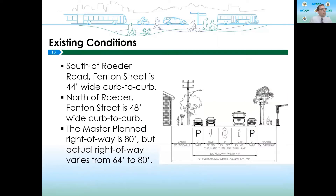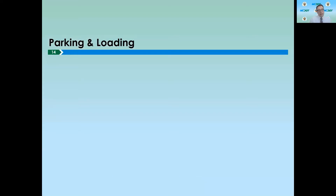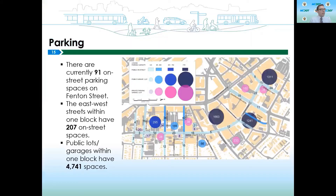In terms of what the street looks like right now, between Roto Road and Cameron Street at the very north end, it is 48 feet wide between the curbs — that's the roadway portion, not including sidewalks. South of Roto Road, it is 44 feet wide, so it's a little narrower in the south, making it more challenging to fit things in. In terms of parking, there are 91 on-street parking spaces on Fenton Street within the project area. On the east-west streets within one block of Fenton Street, there are 207 parking spaces. There are also 4,741 parking spaces available in county-owned lots and garages within one block of Fenton Street.